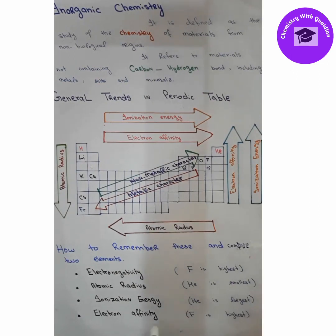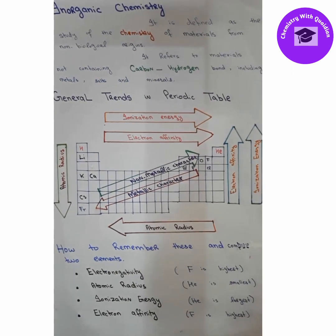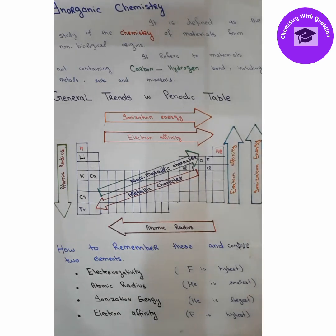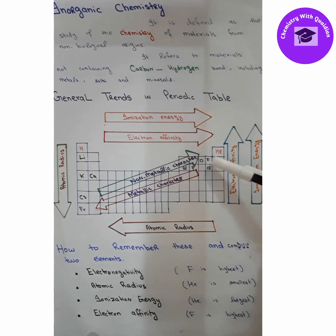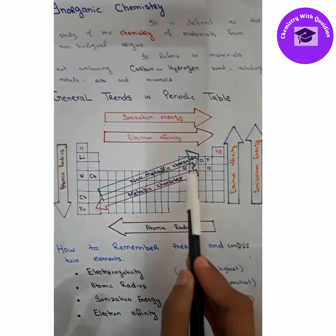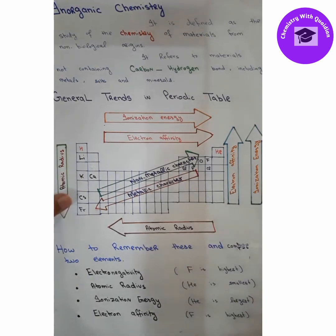So ionization energy increases along the period. Now let's talk about electron affinity. Electron affinity is the energy released when an electron is added to the outermost shell. The elements hungriest for electrons are the halogen family — they have one electron less than the octet, so they want to gain one electron quickly to stabilize themselves, giving them very high electron affinity. Fluorine has the highest electron affinity. For example, phosphorus has high electron affinity and cesium has low electron affinity.